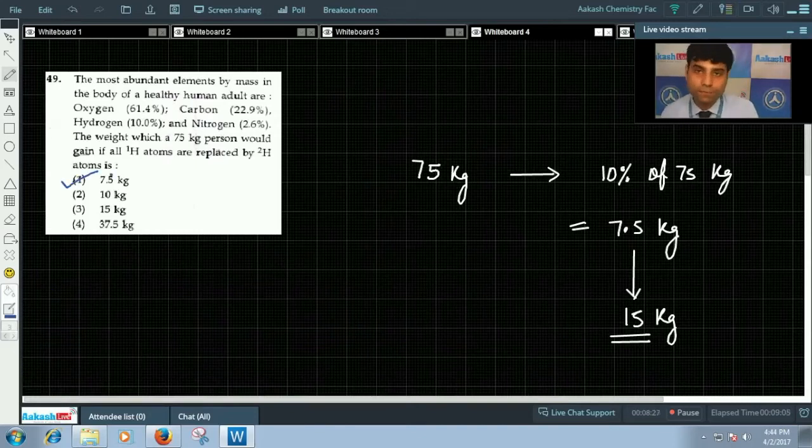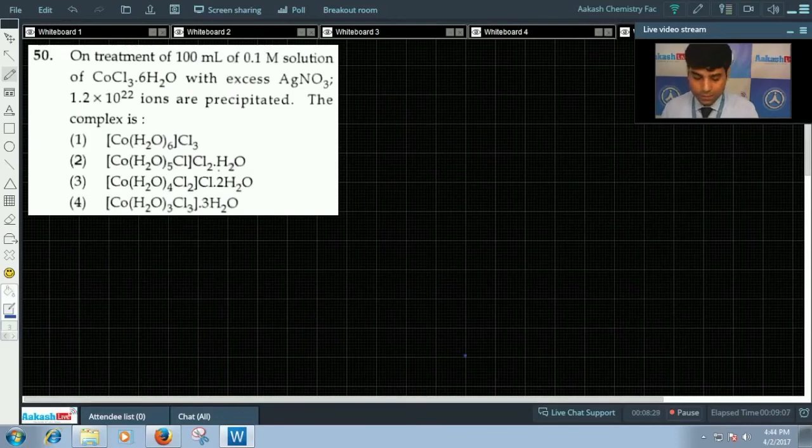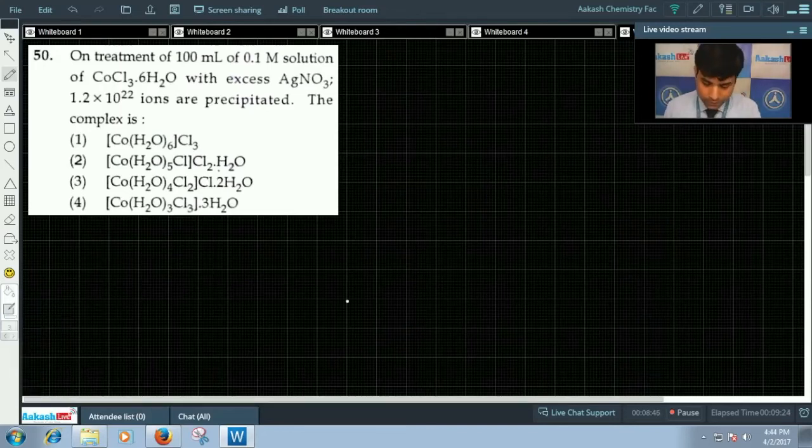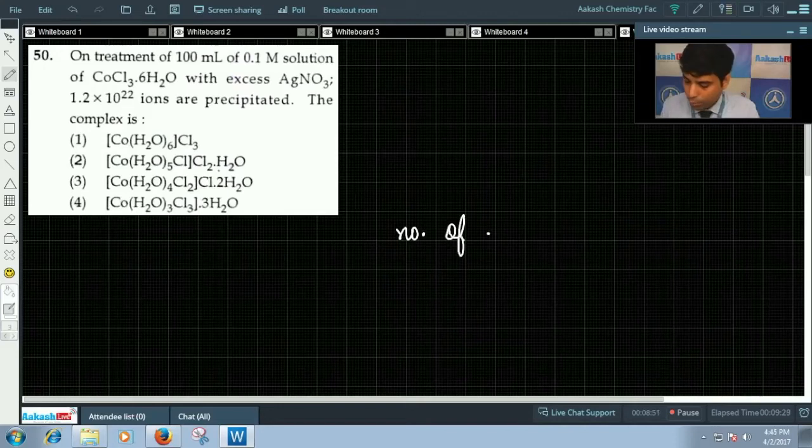Now let's move to question number 50. Question 50 says: on treatment of 100 ml of 0.1 molar solution of CoCl3·6H2O with excess of AgNO3, 1.2×10²² ions are precipitated. The complex is.